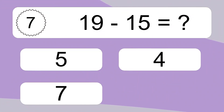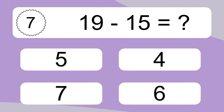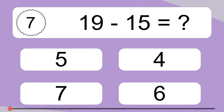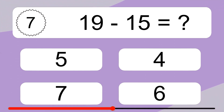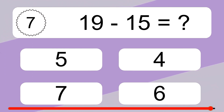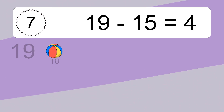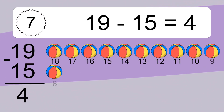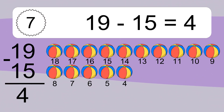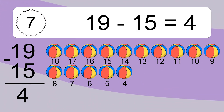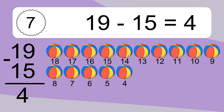19 minus 15 equals what? 19 minus 15 equals 4. Let's count it: 18, 17, 16, 15, 14, 13, 12, 11, 10, 9, 8, 7, 6, 5, 4.